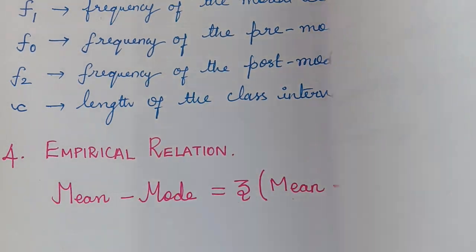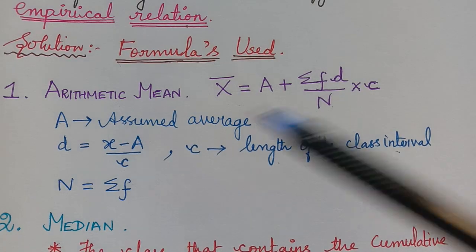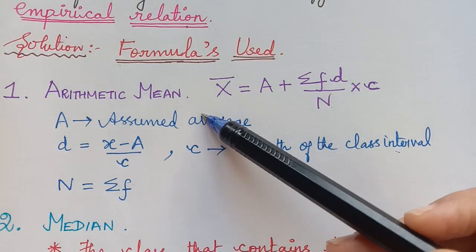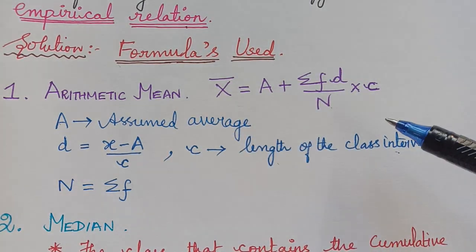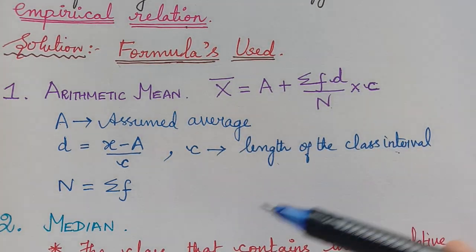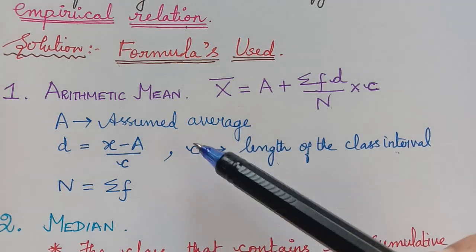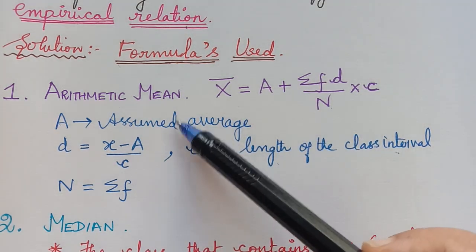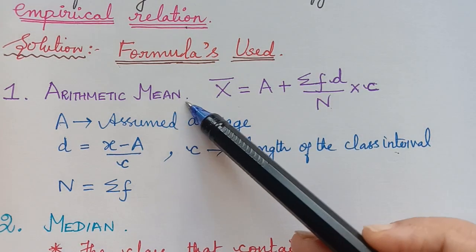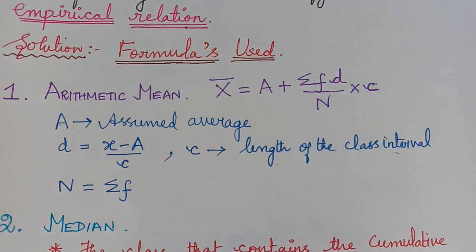First we shall do the arithmetic mean. The tabular column that we have to draw should be in such a way that it helps us to find the arithmetic mean, median and mode.